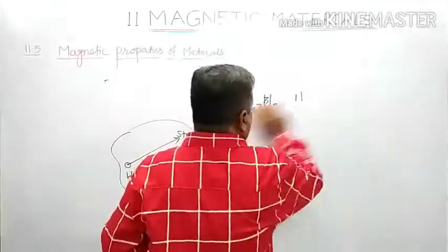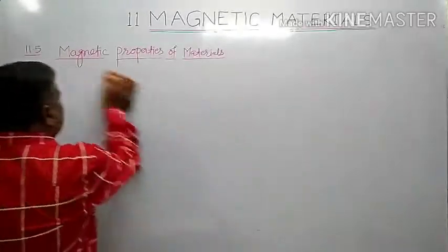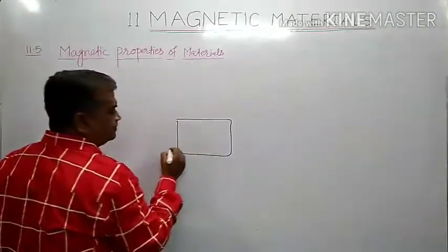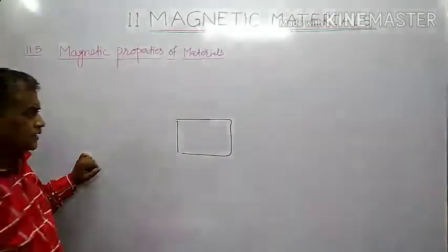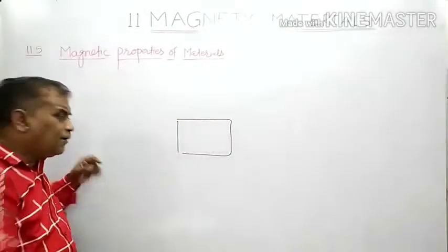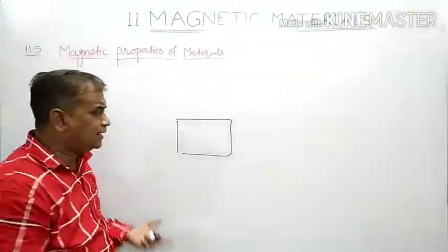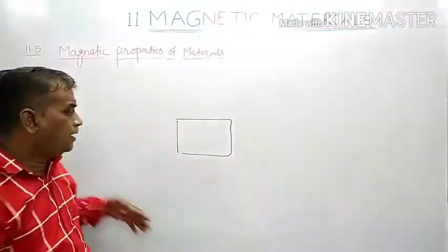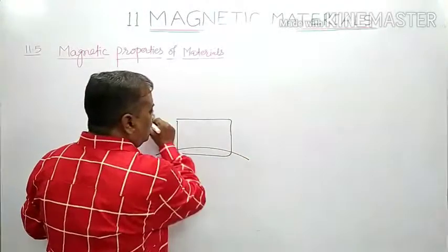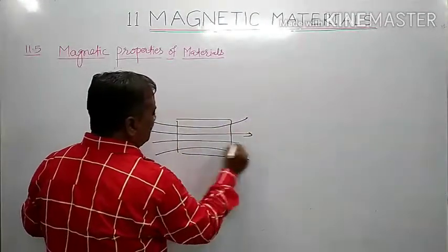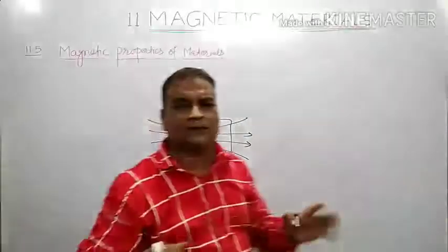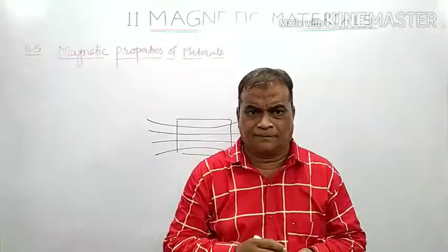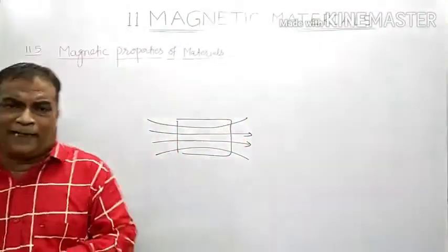When paramagnetic materials are kept in an external magnetic field and get magnetized in the direction of the applied field, the number of magnetic lines of force passing through the paramagnetic material increases. This is all about paramagnetic material.